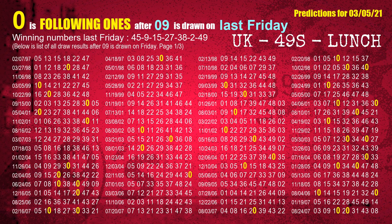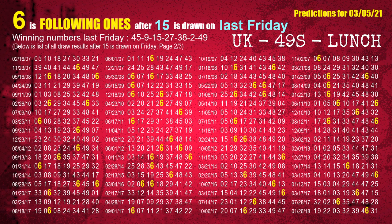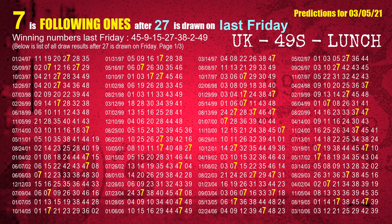The second winning number last Friday is 09. The most frequently following units digit is 0 when 09 is the winning number on last Friday. The third winning number last Friday is 15. The most frequently following units digit is 6 when 15 is the winning number on last Friday. The fourth winning number last Friday is 27. The most frequently following units digit is 7 when 27 is the winning number on last Friday.